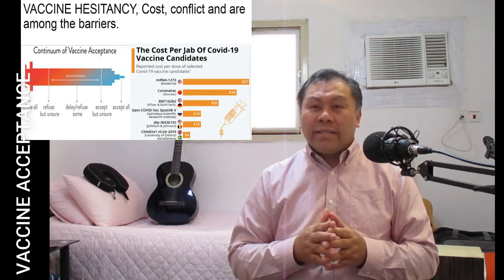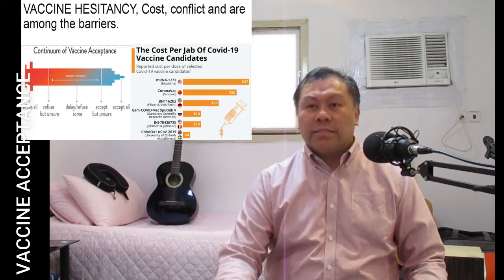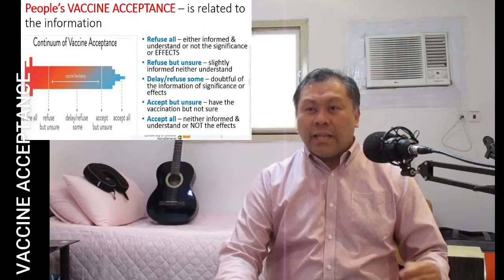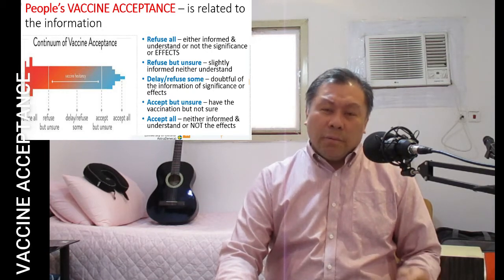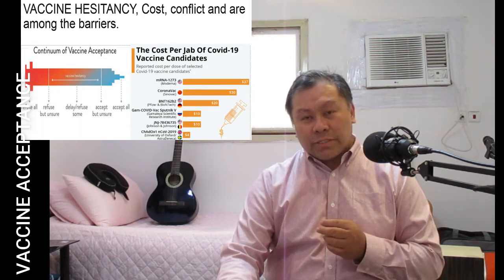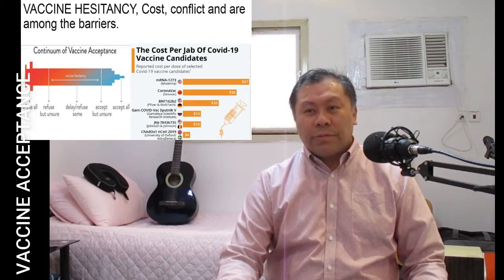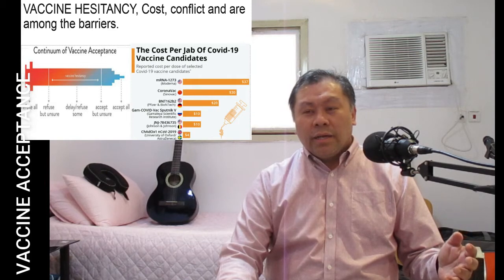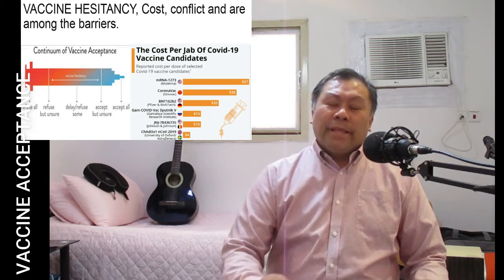Vaccine hesitancy, cost, and conflict are among the barriers to vaccine acceptance. This is related to the information you know and understand. People may refuse a vaccine because they are either informed and understand, or not, the significance of its effects. Some are slightly informed but unsure, causing them to delay or refuse. Some are doubtful of the information or significance of the vaccine's effects. Others may take the first dose but discontinue because of side effects. And some accept but are unsure, or accept fully — taking the vaccination.